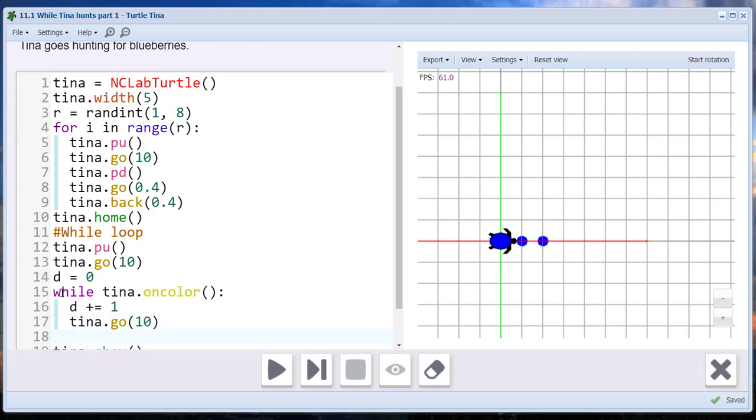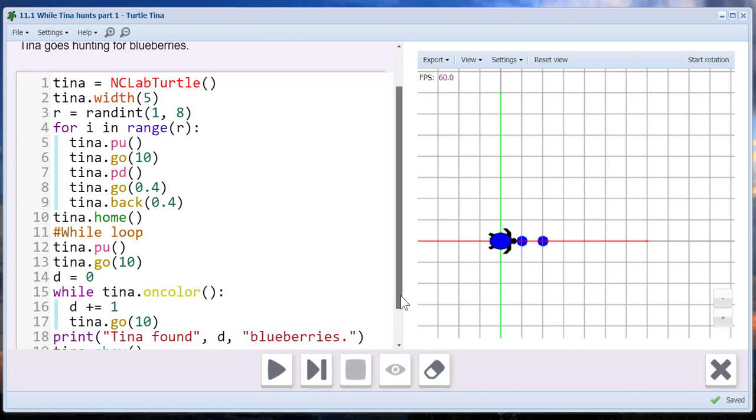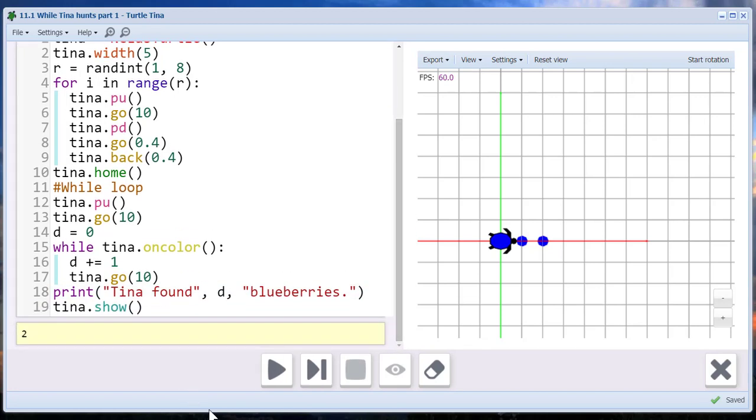And what we want to do at the end is print out how many dots we found. So we'll write, Tina found. And the final value for D, and let's call them blueberries, we'll make it part of a story. Okay, so now we have our while loop, let's run it and see what happens.